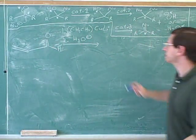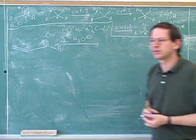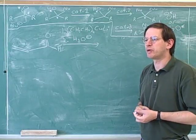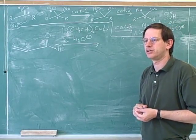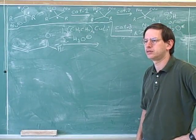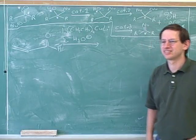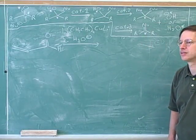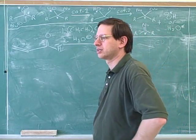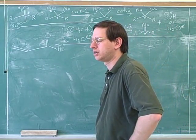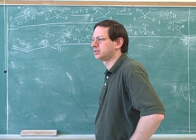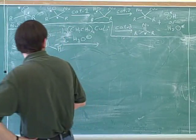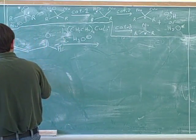Let's go through the mechanism for this together. Any proposals about what might happen first here? It's CuLi — it's going to go to the beta carbon. Right. And then the alkene bond is going to move that way, and the carbonyl bond is going to move up to the oxygen. The oxygen is going to get put into an alcohol. That sounds good. It looks like you guys are comfortable with that.